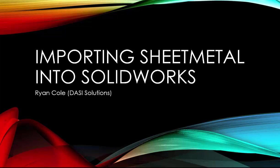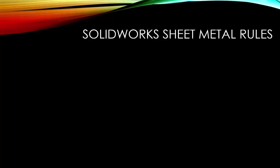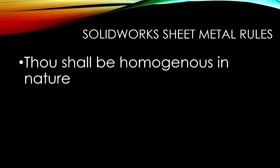The first thing we need to cover is what is a sheet metal part. There are actually three rules that we need to follow inside of SolidWorks. The first one is it must be homogenous in nature. What I mean by that is everything has to be the same thickness. You can't have one side at an eighth of an inch and the other side at a quarter inch. It has to be completely flat - think about a sheet of paper, cardboard, or a piece of sheet metal. That's actually one of the biggest rules. If you violate that, SolidWorks is not going to be your best friend.